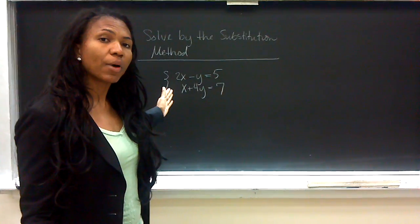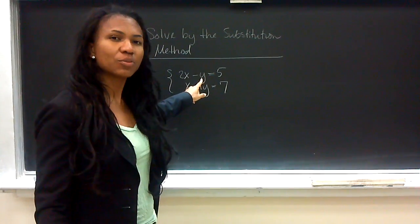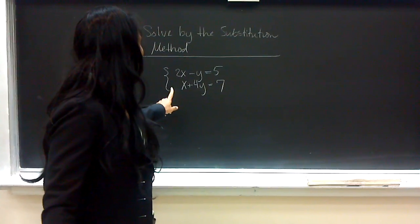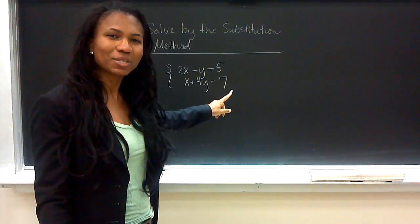Behind me is a system of equations. We have 2x minus y is equal to 5, and we have x plus 4y is equal to 7.